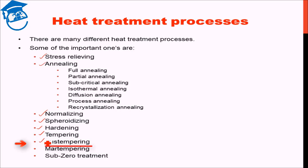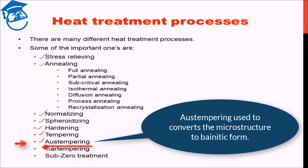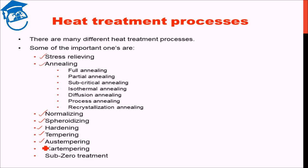Austempering is used to convert the microstructure into bainitic form. Martempering is also used to form martensite — both hardening and martempering form martensite, but there are basic differences between them, with certain advantages and disadvantages associated with each process.